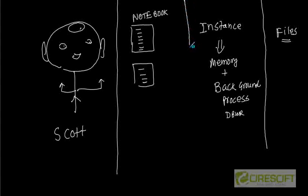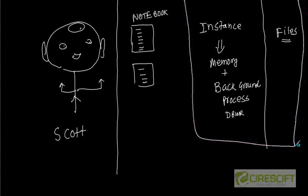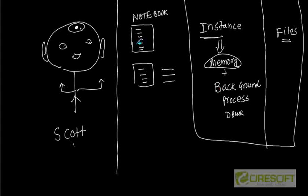So we have an instance and we have some files. This is what essentially makes up an Oracle database server. Scott is equivalent to the instance, his memory is equivalent to the instance memory, and his hands, eyes, and ears are equivalent to our background processes. The way Scott has notebooks where he writes, we have files.